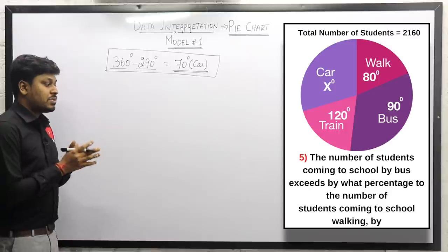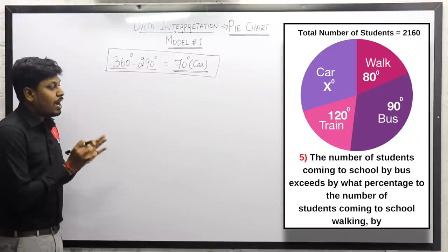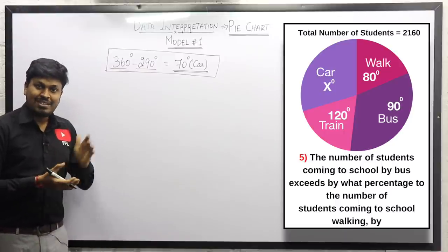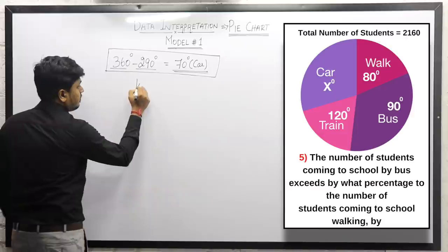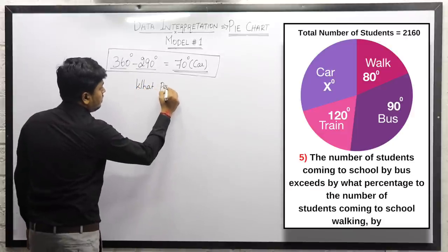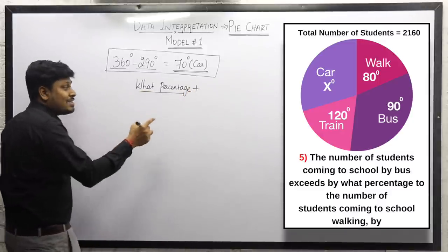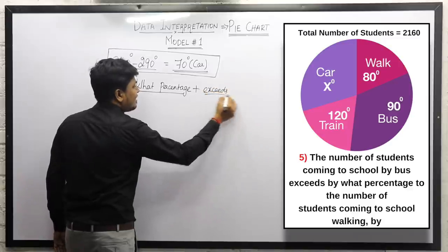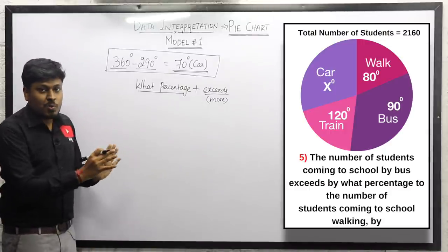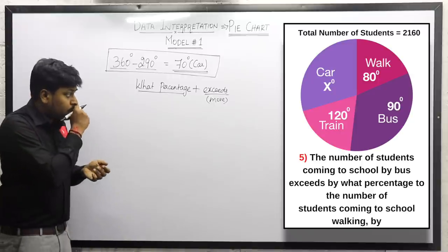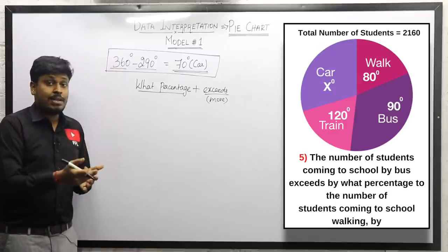Question 5: By what percentage does the number of students coming by bus exceed the number coming by walking? Read the question carefully to find the two clue words: first is 'what percentage,' and the second is 'exceeds,' which means 'more.' When you have 'what percentage more,' use the specific formula.